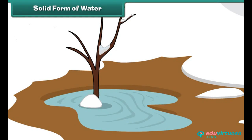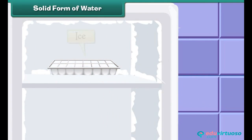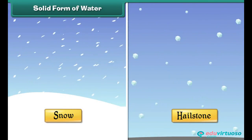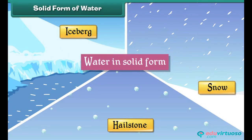Liquid water turns solid when cooled. At home we have seen liquid water become ice when kept in the freezer. Therefore ice is an example of water in solid form — it is man-made. Icebergs are huge pieces of ice found in seas and oceans at very cold places. Snow and hail stones are small pieces of ice. Icebergs, snow, and hail stones are also examples of water in solid form; however, they are naturally formed.